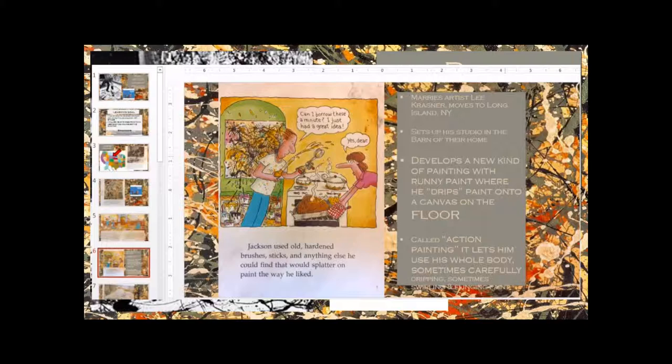There is where he developed a new type of painting where he dripped paint onto the canvas all over the floor. This was called action painting because he could use his whole body, sometimes carefully dripping, swirling, and flinging paint around the canvas.